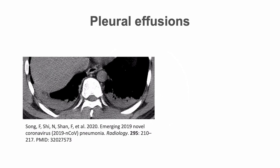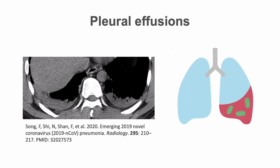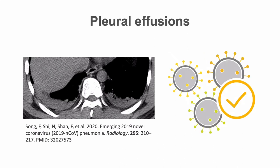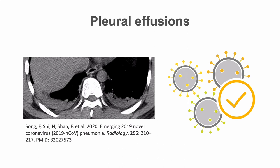Pleural effusion is considered to be characteristically absent in COVID-19, and its presence may indicate a coexisting bacterial pneumonia. There are some reported cases of COVID-19 with pleural effusion, although this is still uncommon. In a study comparing COVID-19 with other viral pneumonias, pleural effusion was more common in non-COVID-19 viral pneumonias. Pleural effusion may also be a poor prognostic indicator according to several preliminary studies.